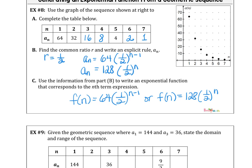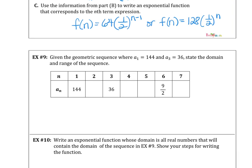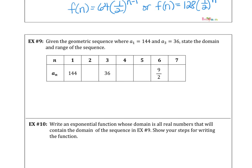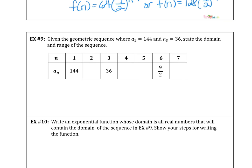Example 9. Given the geometric sequence where the first term is 144 and the third term is 36, state the domain and the range. Once again, we're going to use that geometric mean, multiplying 144 times 36 and taking the square root, so that we have the second term, a sub 2. And 144 times 36, the square root is 72.